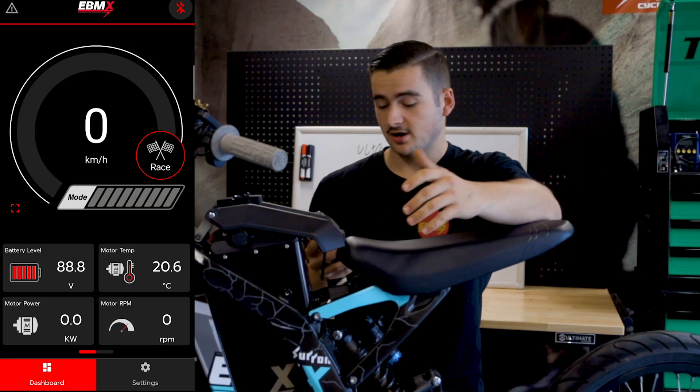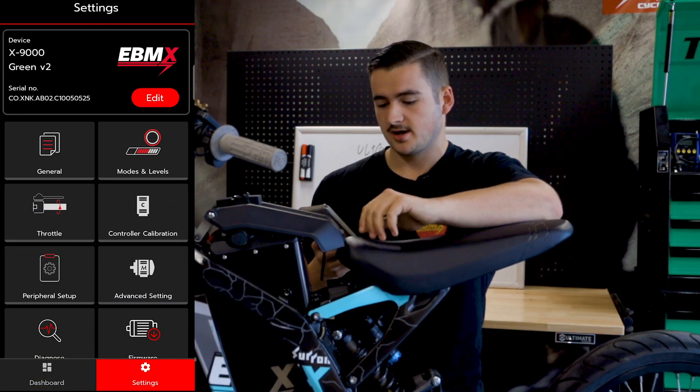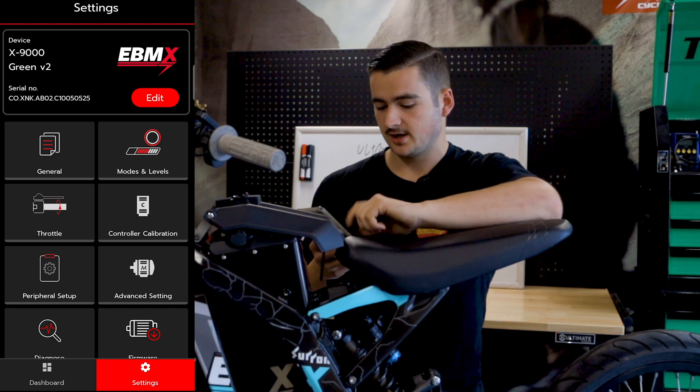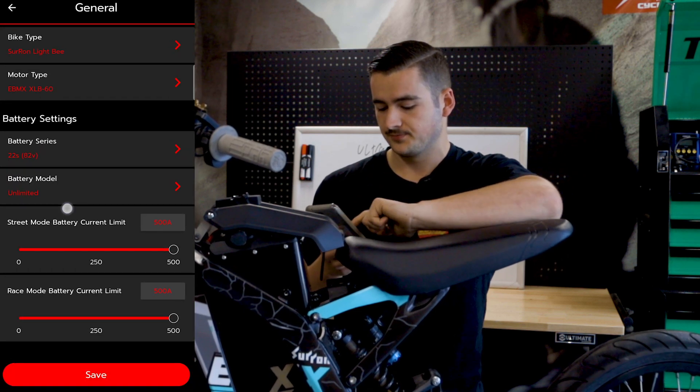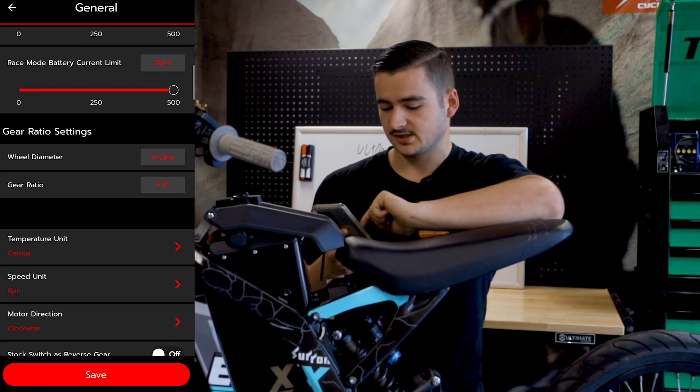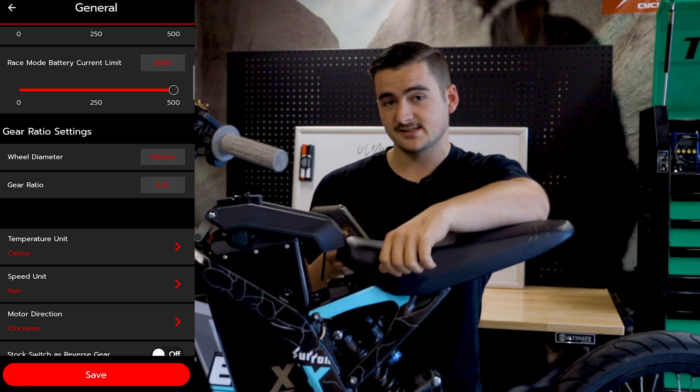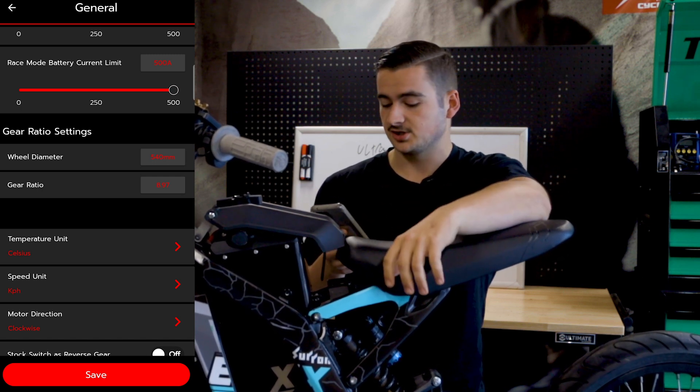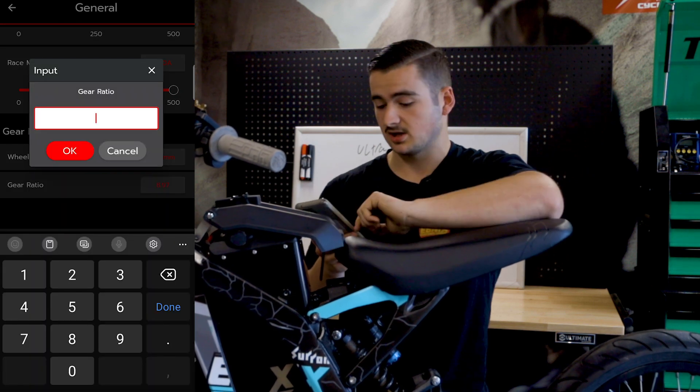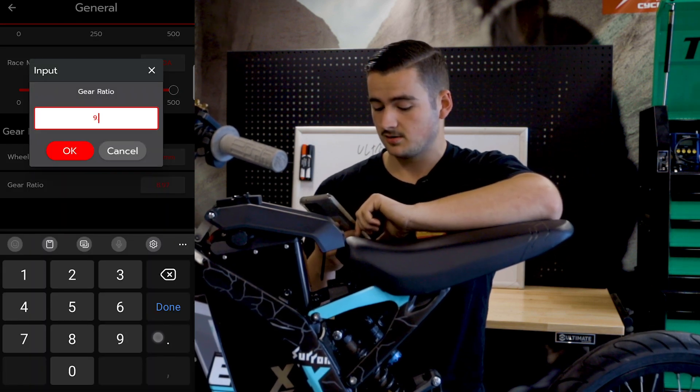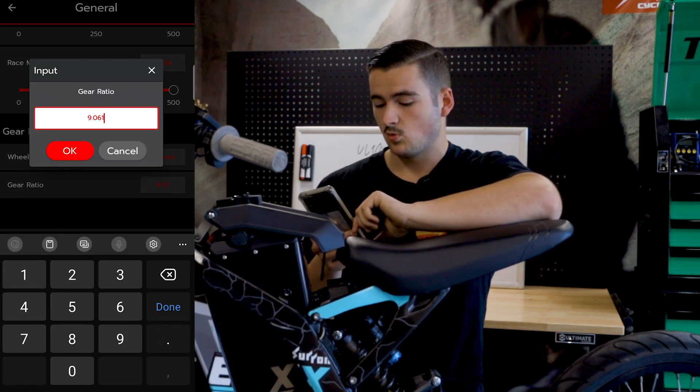All right so then we go over to our app and we're logged into our drag bike here. We then go into general, scroll down and we see wheel diameter and gear ratios. Our wheel diameter is 540. Now I've recently changed my gear ratio. We just calculated it on the bench. So it's 9.061.